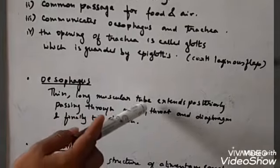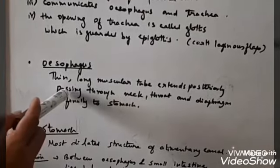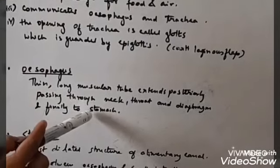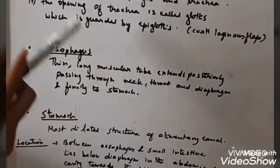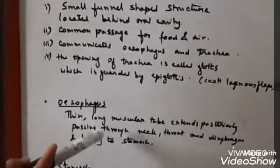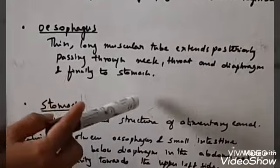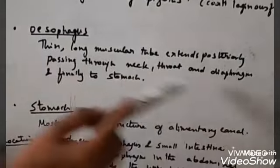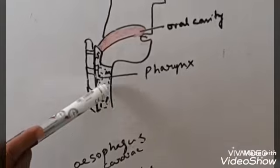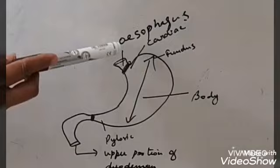The esophagus is a long thin tube-like structure that extends posteriorly, passing through the neck, throat, and diaphragm, and finally to the stomach. This esophagus is regulated by a gastroesophageal sphincter. The gastroesophageal sphincter regulates the opening of the esophagus into the stomach. While entering the stomach, the esophagus is guarded by this sphincter.